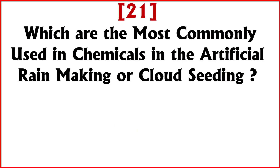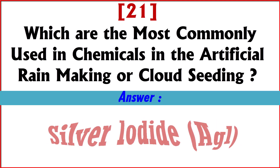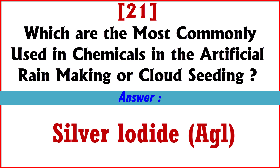Which chemical is most commonly used in artificial rain making or cloud seeding? Answer: Silver Iodide.